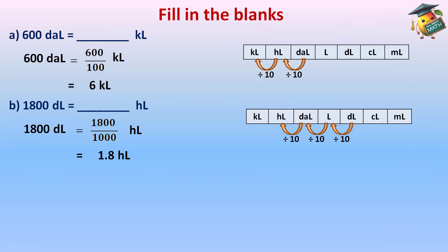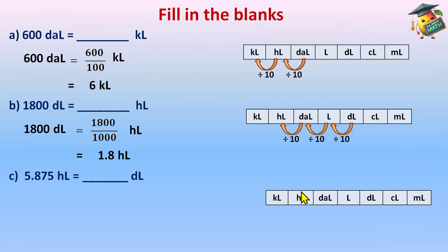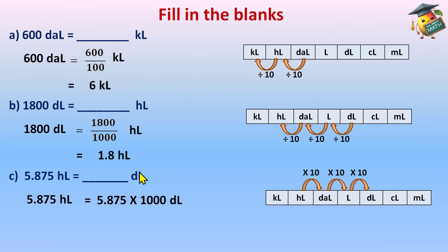The next question: 5.875 hectolitres to deciliters. Make the chart. Hectolitre to deciliter — moving forward, left to right. Steps: hectolitre to decalitre, decalitre to liter, liter to deciliter — three jumps, multiply by 10 each step, so multiply by 1000. Shifting the decimal three places to the right gives 5875 deciliters.